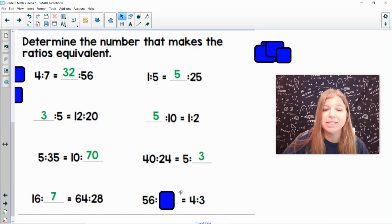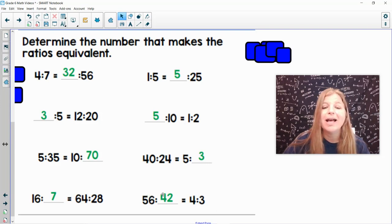16 to blank equals 64 to 28. 16 times 4 is 64. What number times 4 would get me 28? 7. And the last one. 56 to blank equals 4 to 3. 56 divided by 14 is 4. What number divided by 14 would get me 3? I could work backwards. 3 times 14 is 42. 56 divided by 14 is 4. And 42 divided by 14 is 3.